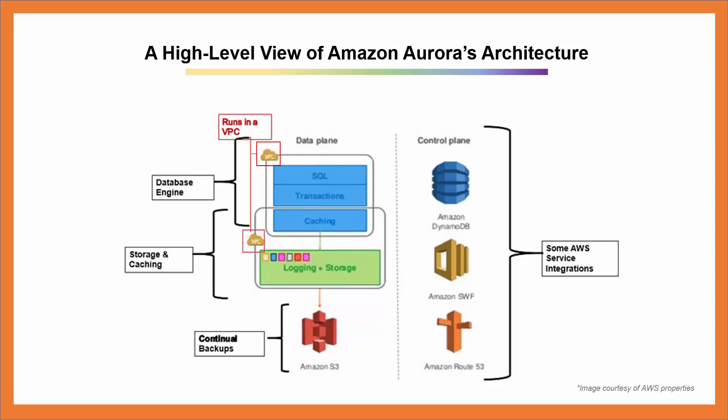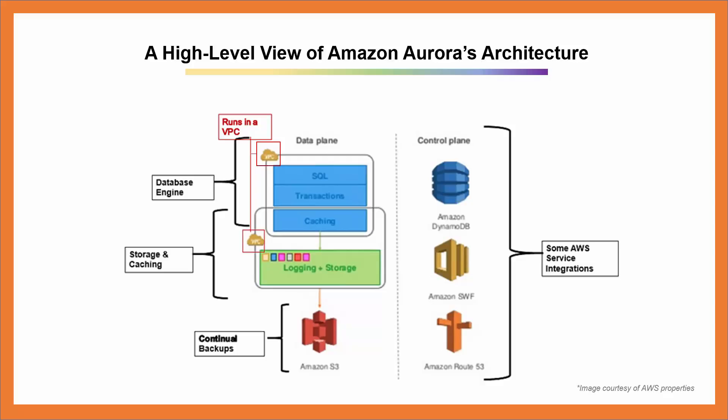Amazon S3 has 11 nines of high durability — 99.999999999% — which is definitely highly durable. On the right side of the architecture diagram, the team integrated this new architecture with premier Amazon services for control plane operations, such as DynamoDB, Simple Workflow Service, and Route 53. This concludes section 1.5, Amazon Aurora's High Performance Overview. Coming up next is section 1.6, Amazon Aurora's Scalability Overview.